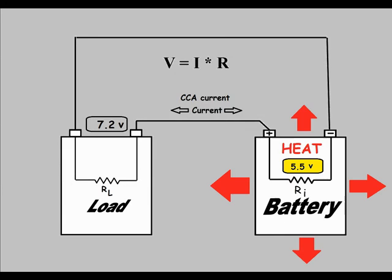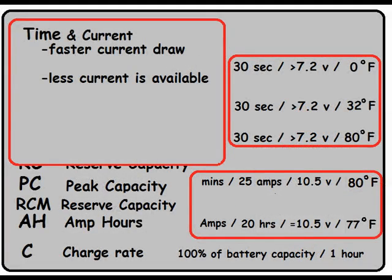So to recap the two things we've learned, we now know why the faster you draw current, the less current you can get out of a battery, as well as when you're checking the health of a battery by measuring voltage, make sure the battery is not under load.